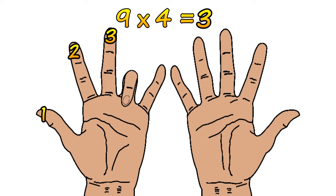And then we count how many fingers there are to the right of the 4th finger. In this case there are 6. And we put that in the answer line. 3 and 6 make 36. So 9 times 4 is 36.